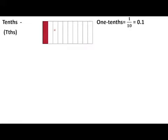The rectangular box shown here is divided into 10 equal parts, and one part is shaded. So the shaded part is written as one tenth, represented as 1/10, and it is equal to 0.1. We read it as zero point one.